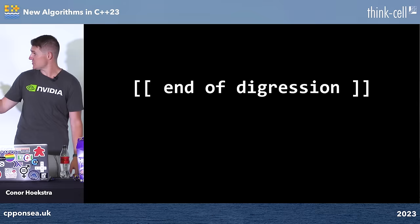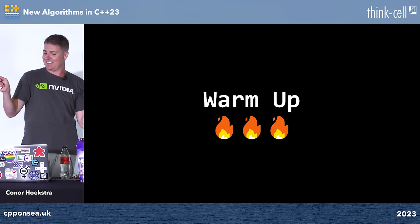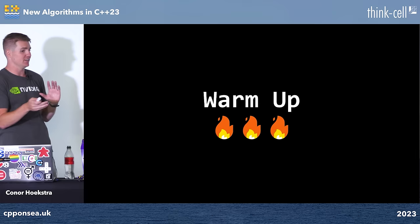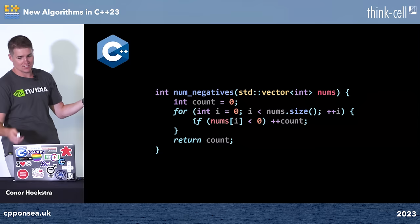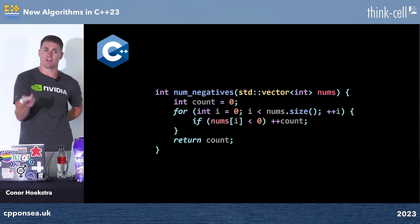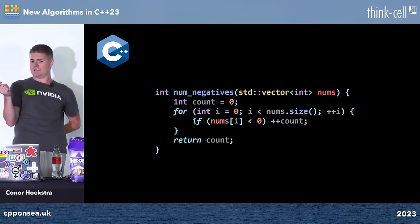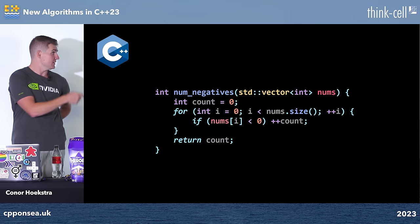End of digression — now we're getting to the warm-up. This is a very simple problem: counting the number of negatives in a vector of integers. Here's a C++98 solution — a local variable count, an index-based for loop, and incrementing whenever we see a negative number.